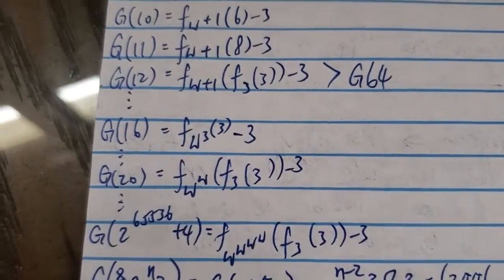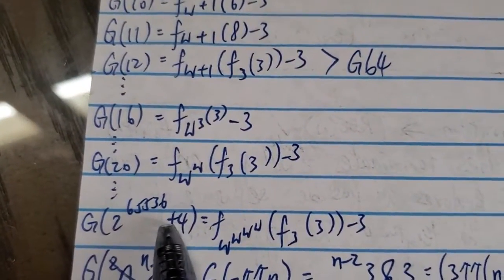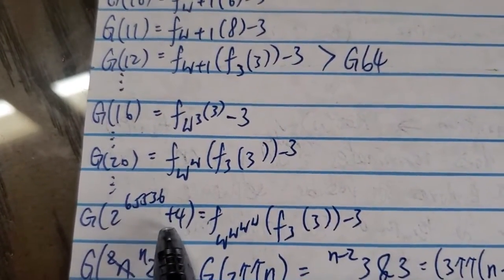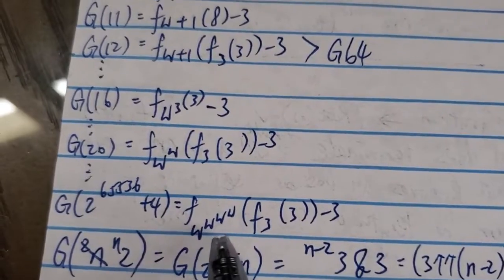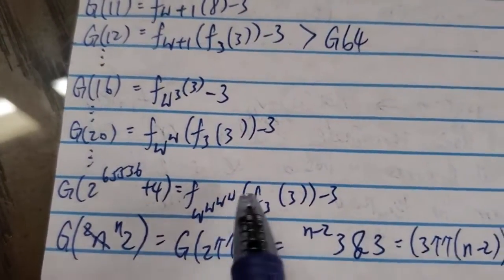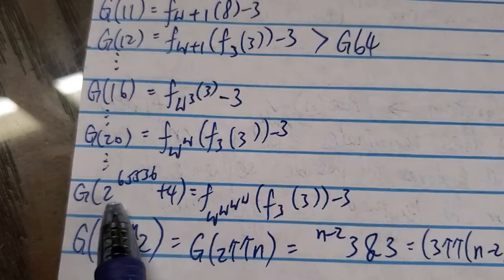And then, of course, eventually, you need a very, very big positive integer to get, you know, crazy growth rate or crazy big numbers. So for this thing over here, g of 2 to the power of 65,536 plus 4.